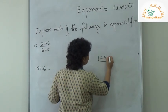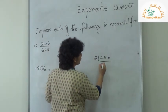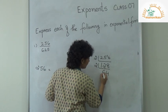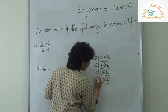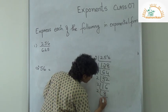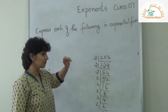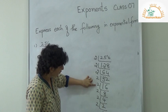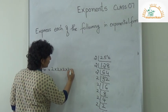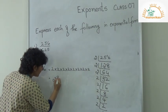How do I put 256 in exponential form? Let me prime factorize it by dividing repeatedly by 2. Counting the number of 2s, I get 1, 2, 3, 4, 5, 6, 7, 8. So this gives me 2 to the power 8.